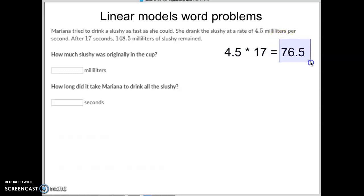She's already drank this much and we still have 148.5 remaining. We could add those two together to figure out how much we started with. When we add those two together, that means we started with 225 milliliters of slushie right here.